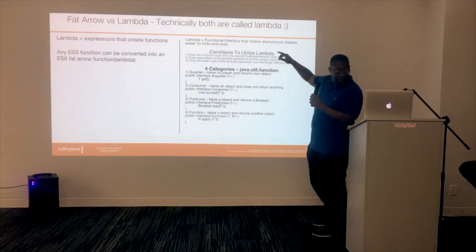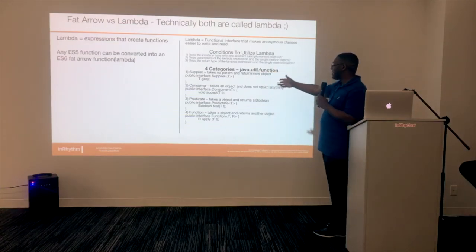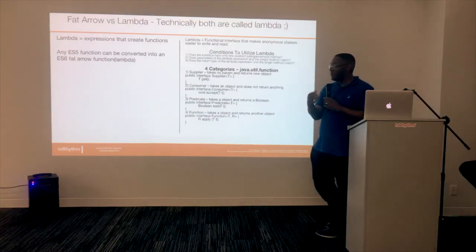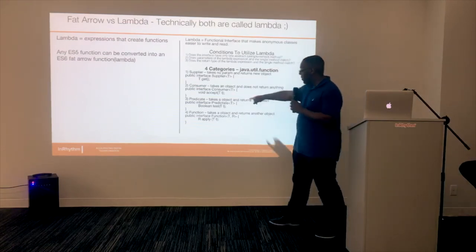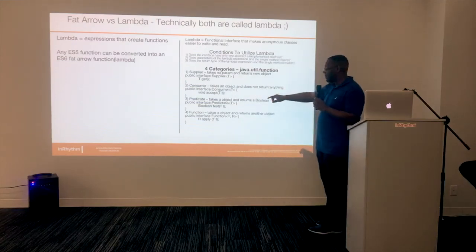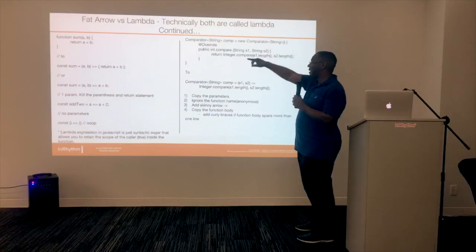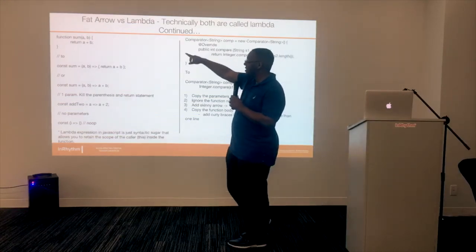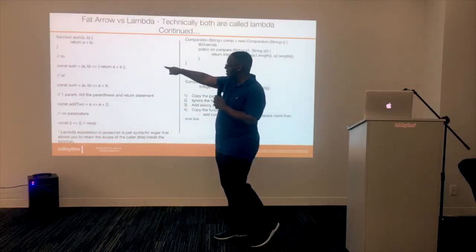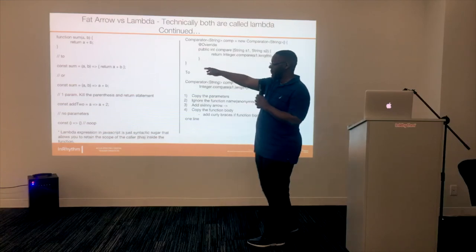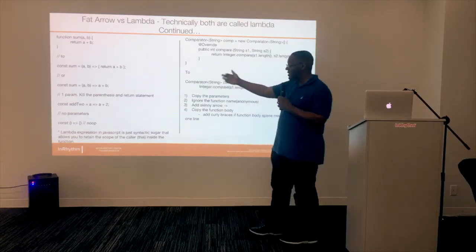Java gives you a lot of built-in functional interfaces. A Supplier takes no parameters and returns an object. A Consumer takes an object and returns nothing. A Predicate is probably most familiar to JavaScript developers — it's like a filter where you say something like A is less than B, and it returns a boolean so only matching items are returned. A Function takes an object and returns an object. For the fat arrow function in JavaScript, you start with the ES5 syntax, remove the function name, keep the parameters with the arrow, and return. If it's a single line, you can remove the return keyword and brackets. If it's one parameter, you can remove the parentheses.